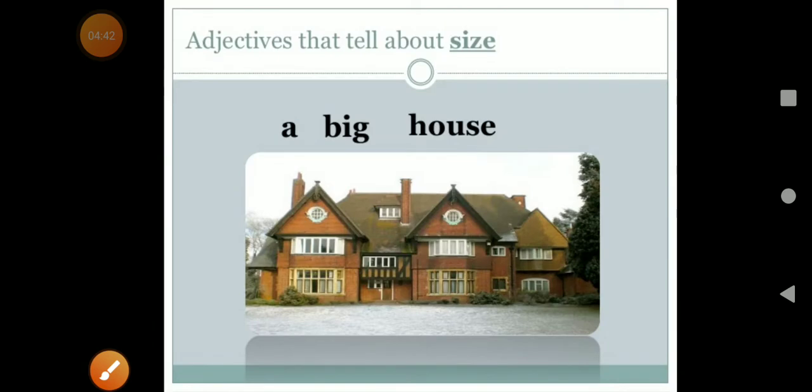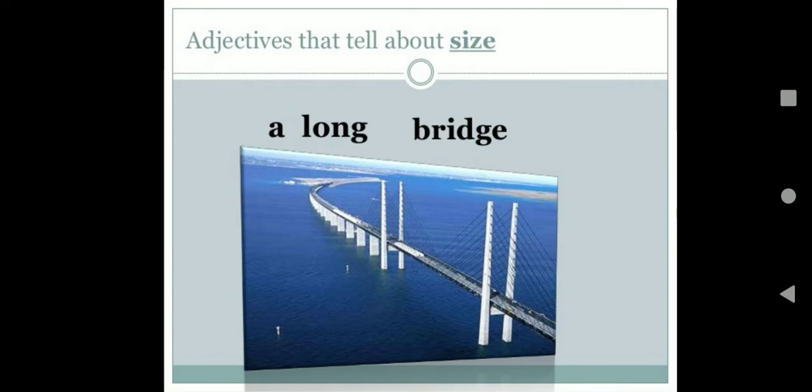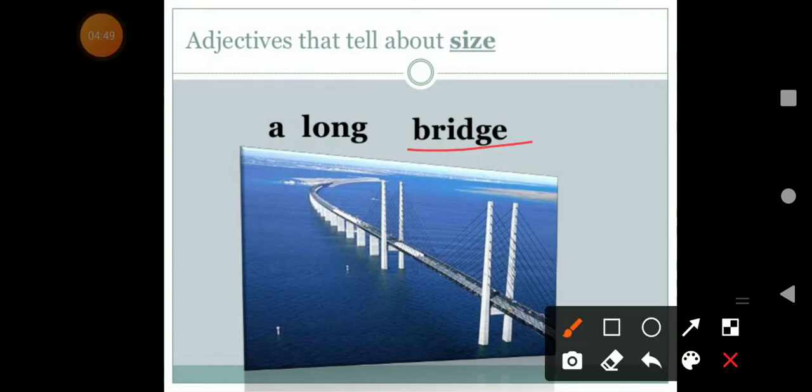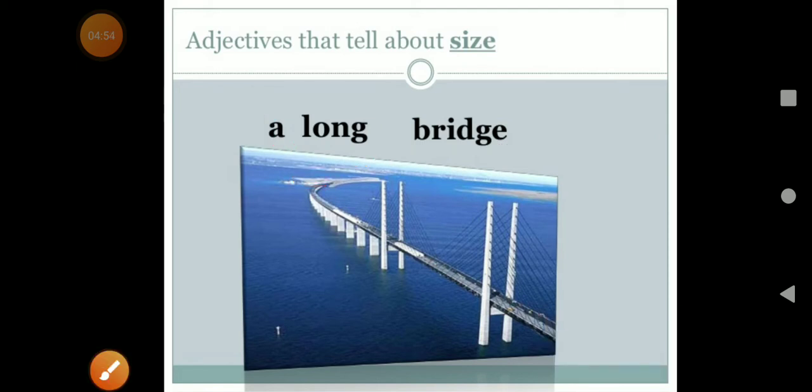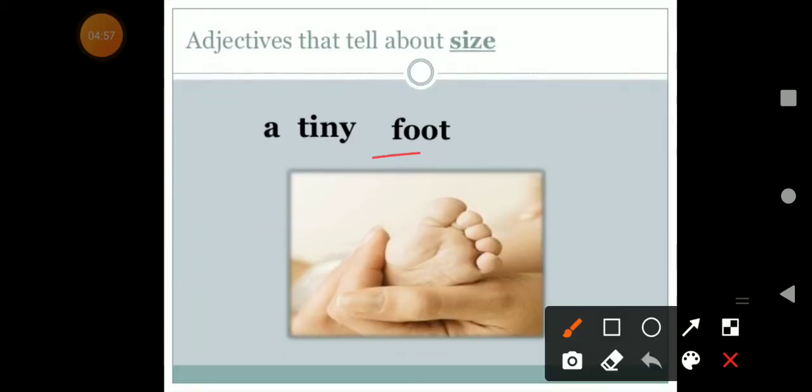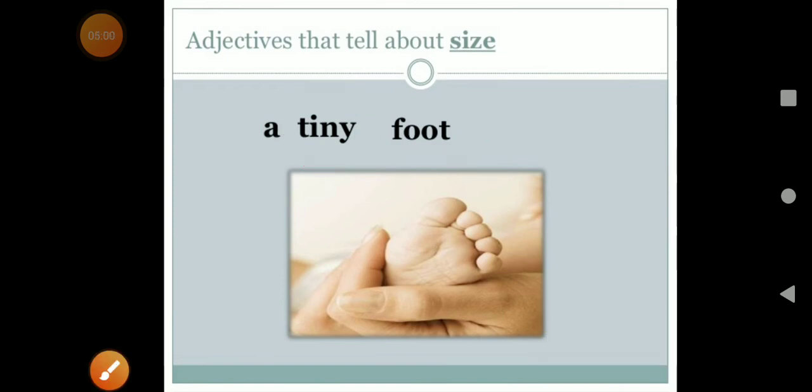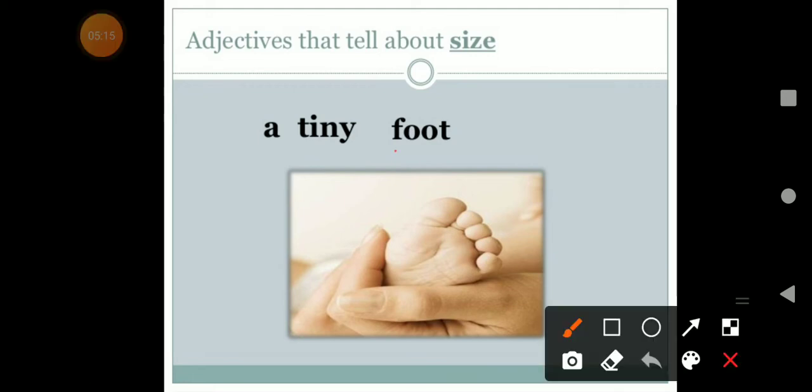In the next picture, can you tell me which is the noun? Yes, bridge. And which is an adjective? Very good. That is long. Long is an adjective. In the next picture, yes, foot is a noun. Tiny is an adjective. Now in the other pictures, you are going to tell me the noun first and after that adjective. I will place a simple line under the noun and circle on the adjective. See, foot is a noun, tiny is an adjective.